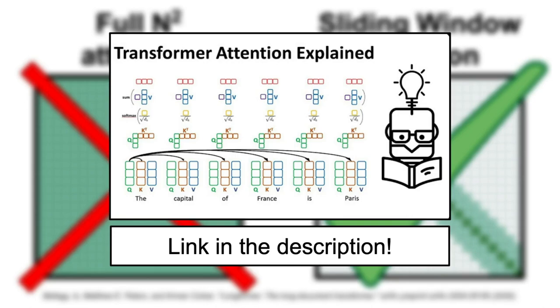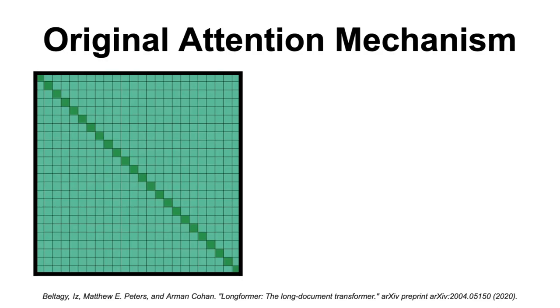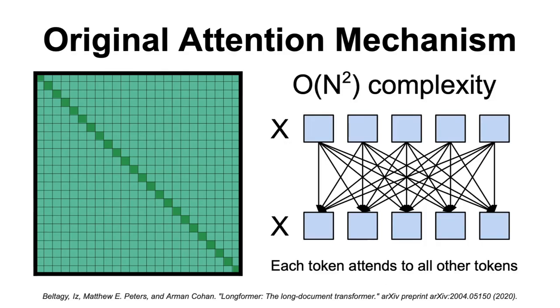So coming back, what problem does the sliding window attention solve? To put it simply, the original attention mechanism has a time complexity of O(n²), where n is the length of the input sequence.